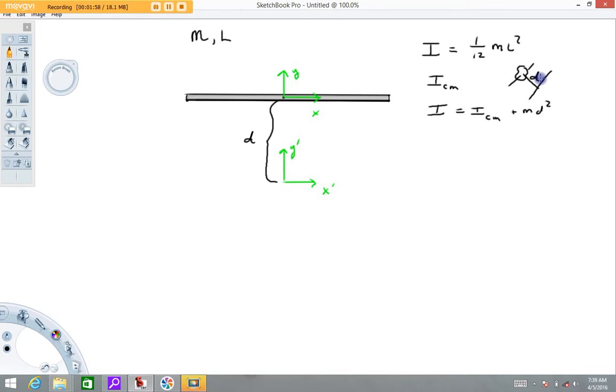All right, so we're going to apply that to the bar here. So the moment of inertia of this bar about this axis is going to equal the moment of inertia of the bar about its centroidal axis, which is 1/12 ml squared, plus we just tack on a term, mass times distance squared, for the fact that the new axis is a distance d away.